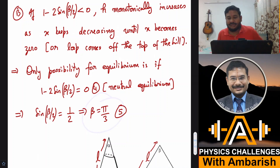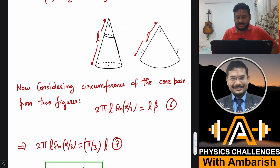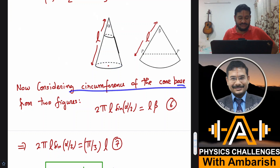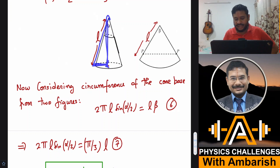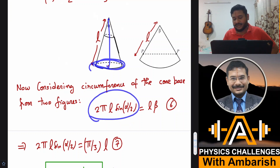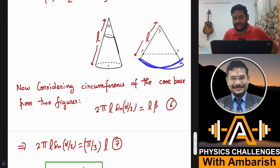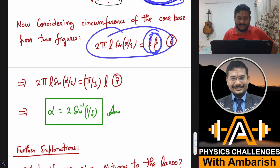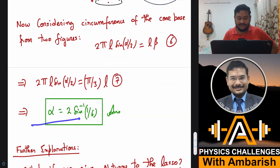If beta is pi/3, we can work out the value of alpha by geometry. The circumference of the cone base must equal the arc length in the planar sector net. From the figure, the circumference is two pi times L sine(alpha/2), and in the net it equals L times beta. Setting these equal and substituting beta equals pi/3 gives: two pi L sine(alpha/2) equals L times (pi/3), so sine(alpha/2) equals one-sixth. Therefore alpha equals two times arcsin(one-sixth), which is the final answer.